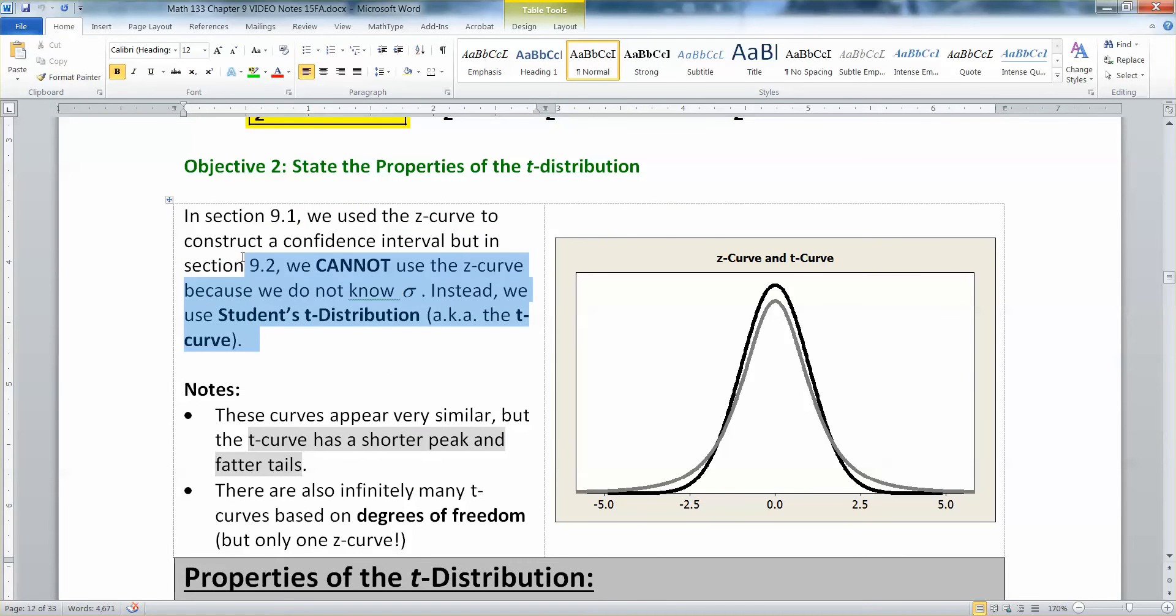So we need to take a moment and work on the T curve. You can't use the Z curve. You don't know sigma. So you're stuck using student's T distribution.